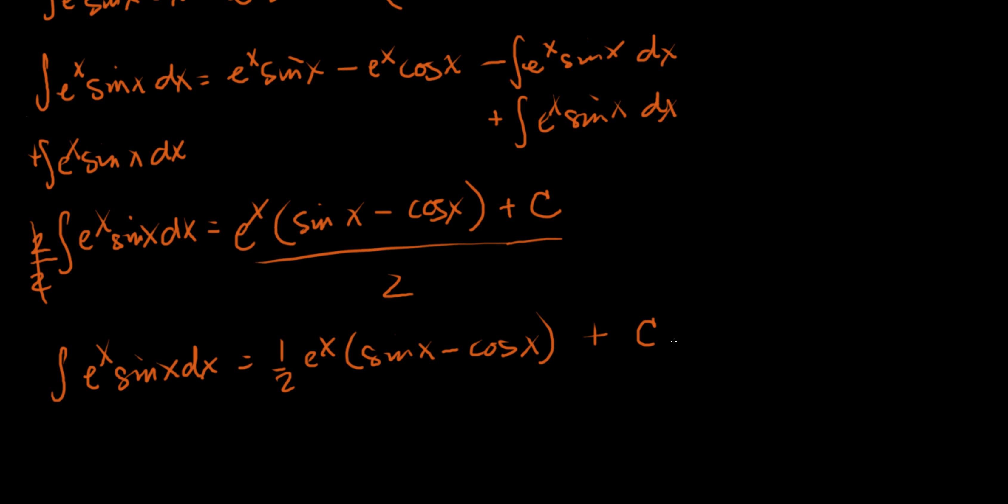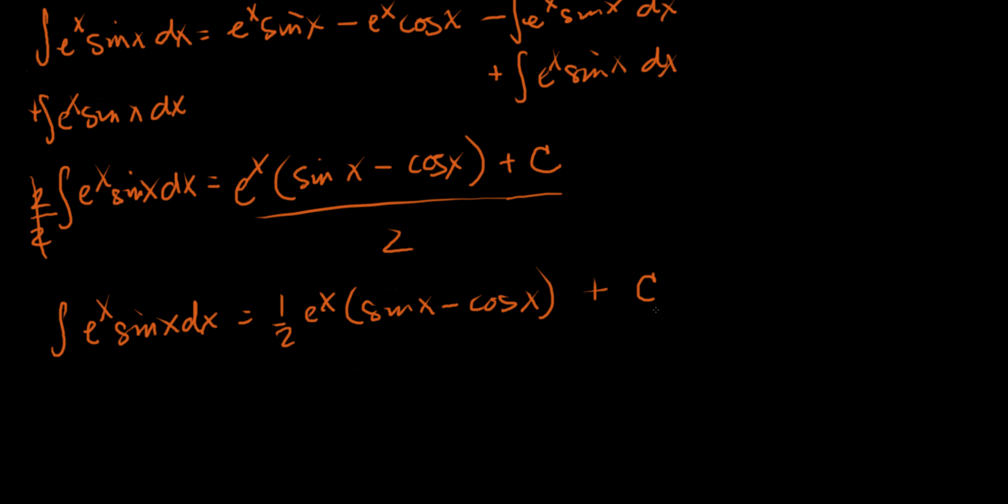And notice I didn't put plus c over two. The reason I did that is because the division by two gets absorbed into the constant. Dividing some constant by two is still a constant, so there's no need to write c over two. Technically this constant here is different from that constant there and we could write subscripts to differentiate between the two, but that's not really necessary in this problem. This is our answer.